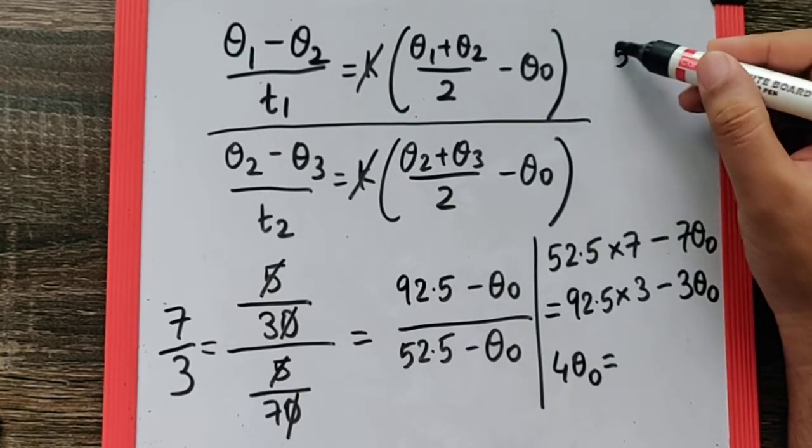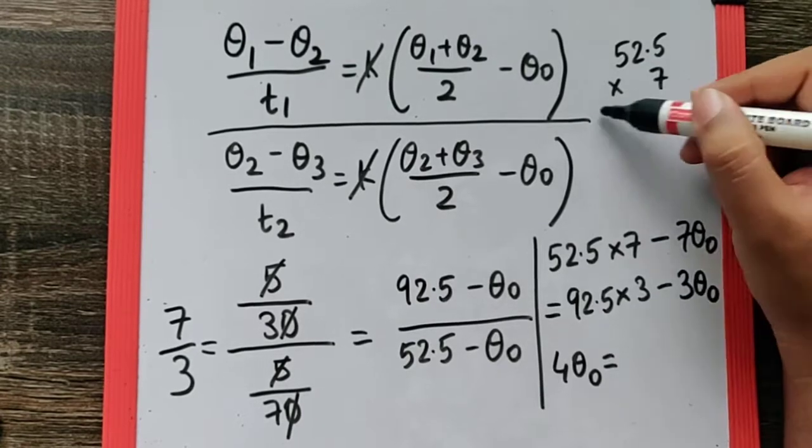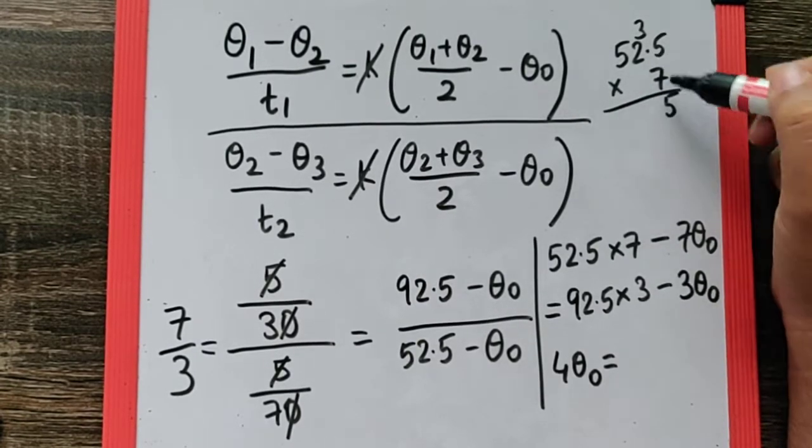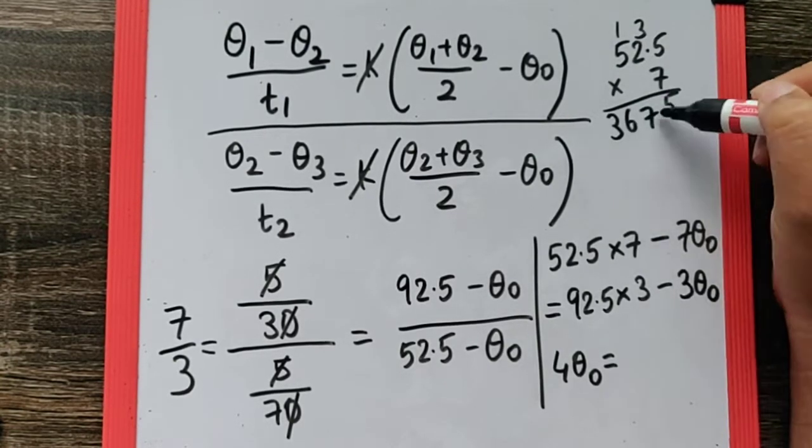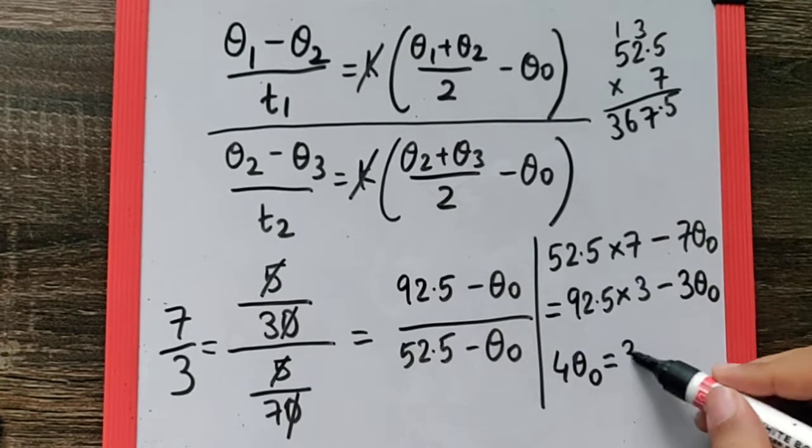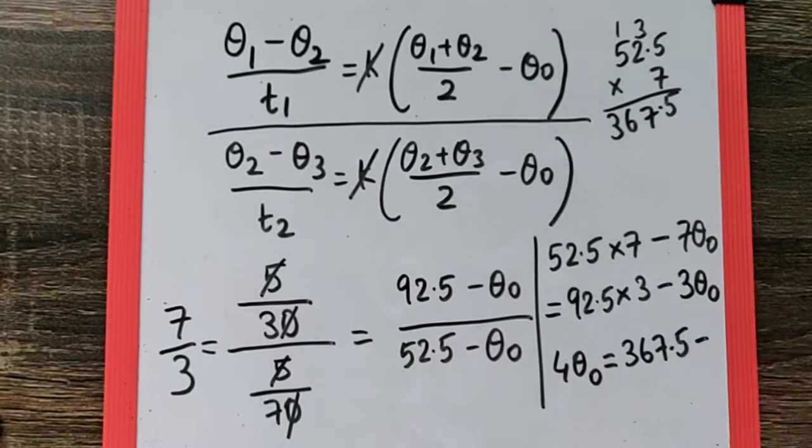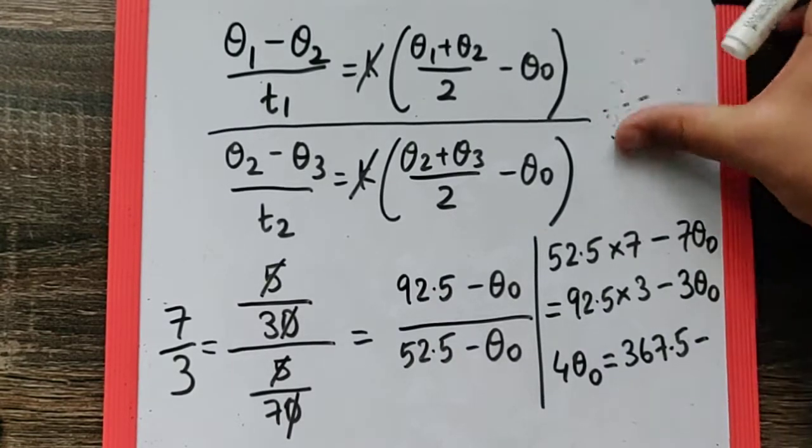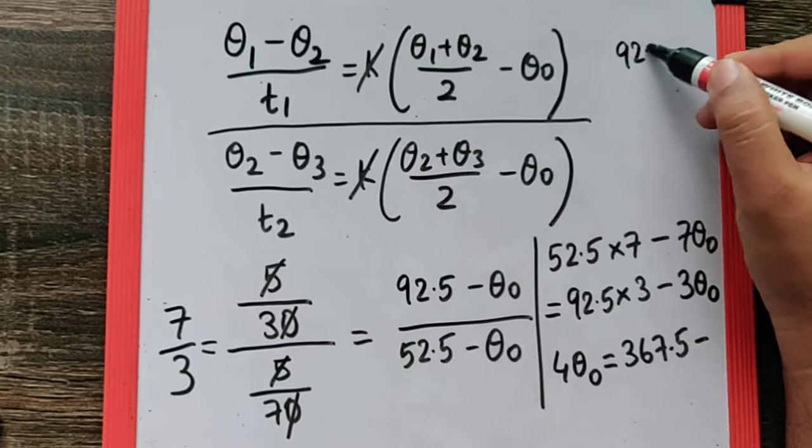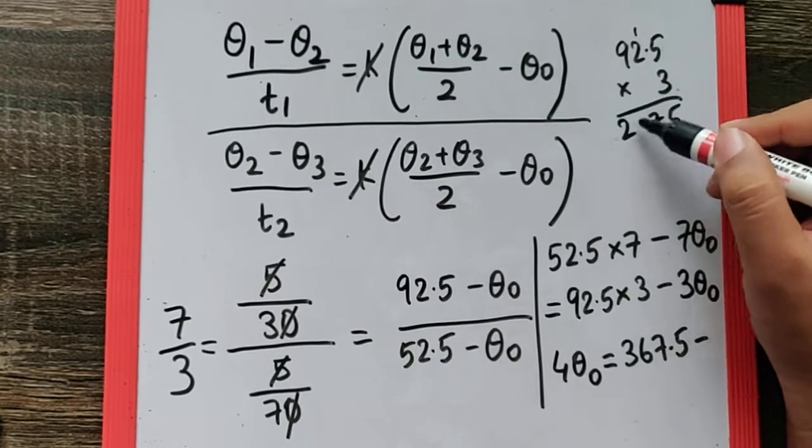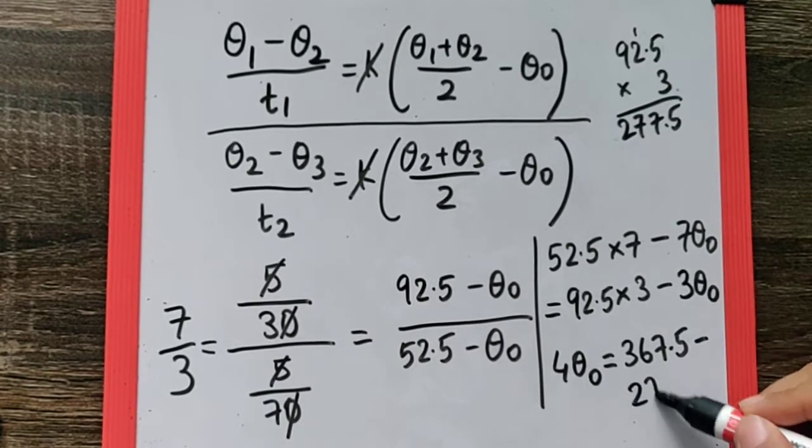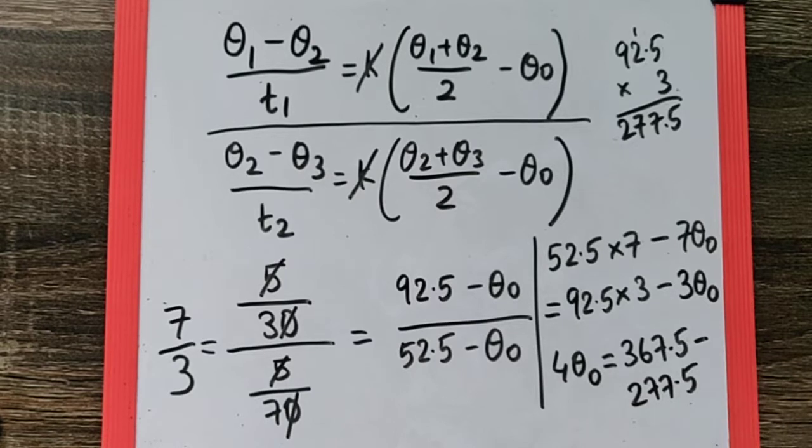Now first we need to multiply this to get the value. So 52.5 into 7, that would give me 35, 14 plus 3 is 17, 35 plus 1 is 36, that's 367.5 minus, the next multiplication would be 92.5 into 3, that's 15, 1 carry, that's 7 and that's 3 nines of 27, so 277.5. Now if you carefully subtract this, you will get this as 90 degree Celsius.